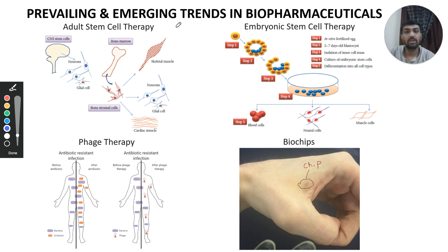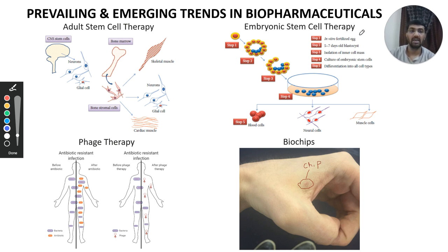These adult stem cells could be used to treat various diseases without any social or ethical restrictions. Moving towards embryonic stem cells, however, there are various ethical issues — presently they are not allowed to be used freely. Embryonic stem cell therapy starts with in vitro fertilization of the egg; after five to seven days a blastocyst is formed, and from the inner cell mass we actually isolate the embryonic stem cells. These embryonic stem cells are then cultured and could be differentiated into any type of cell we want to use to repair an organ in any individual.